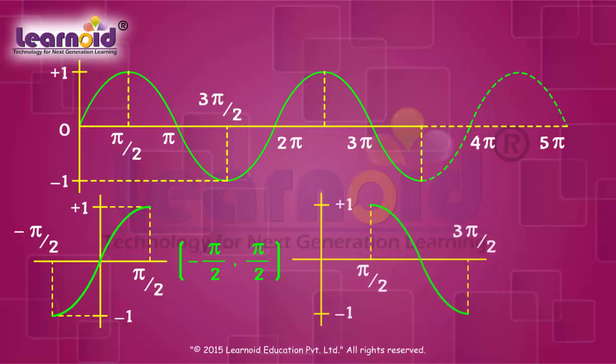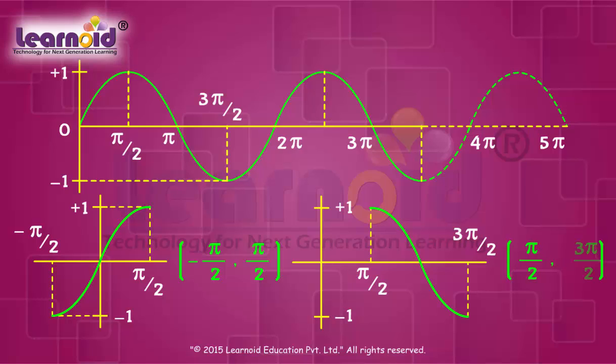It can be any interval such as pi by 2 to 3 pi by 2, etc., which are 1-1 and onto in range minus 1 to 1.